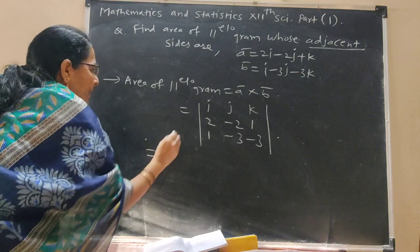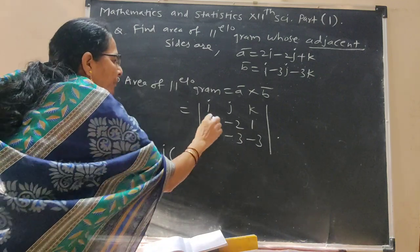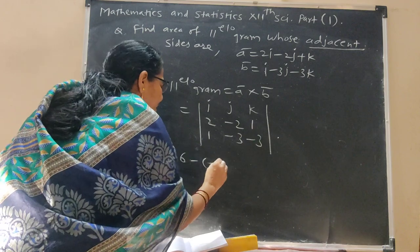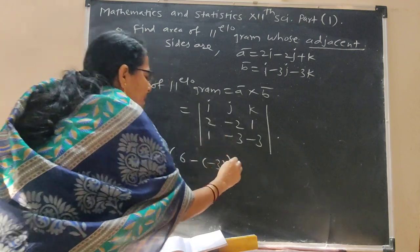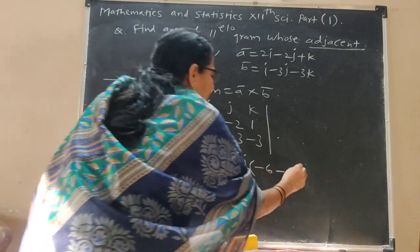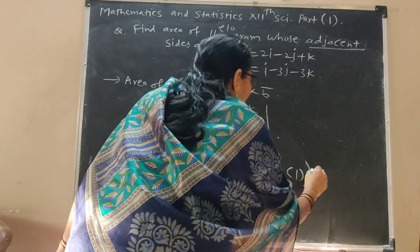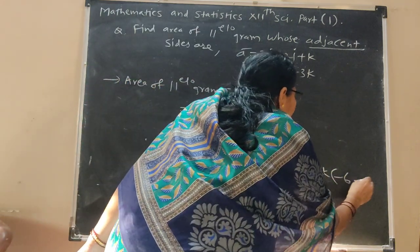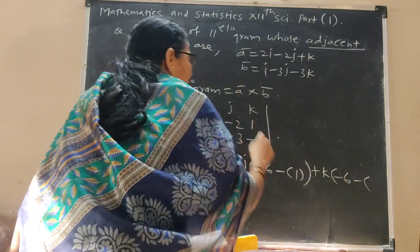For this determinant: i bracket minus 6 minus, this is minus 3 close bracket, minus j bracket minus 6 minus 1 close bracket, k bracket minus 6 minus, minus 2 close bracket.